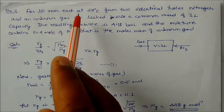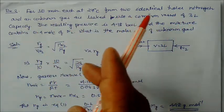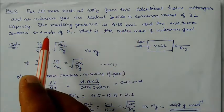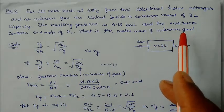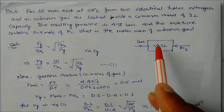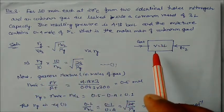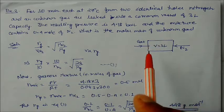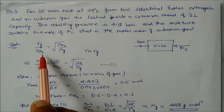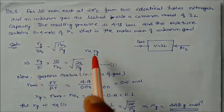Problem 2: For 10 minutes each, at 27°C, nitrogen and an unknown gas are leaked from two identical holes into a common vessel of 3-liter capacity. The resulting pressure is 4.18 bar and the mixture contains 0.4 moles of nitrogen. Find the molar mass of the unknown gas. Using the rate ratio: rate of N2 / rate of unknown gas = √(M_unknown / M_N2), and rate is proportional to moles per unit time.